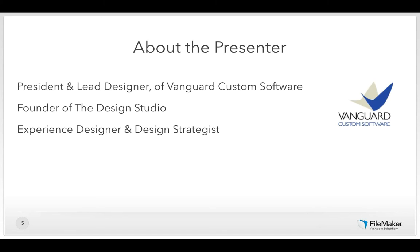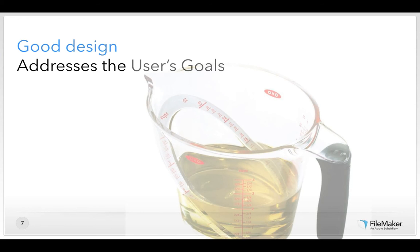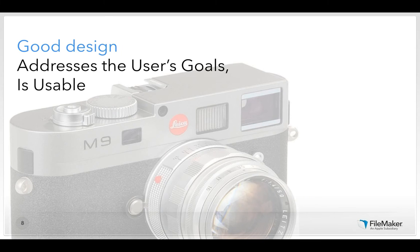Thank you, Matt. All right, let's get started. Good design is what we're going to be talking about today, and there are three things that, in my view, make up good design. The first and most important thing is that good design addresses the user's goals — the reason for the things that we're building, enabling people to achieve their goals in specific situations. Good design is also usable, meaning the solution helps the user accomplish what they want, that they can figure out how to do it, and that it's easy and efficient — that's where we'll spend most of our time today.